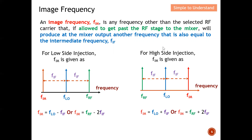For high side injection, FLO is at higher frequency, so FRF is on the left and the image is on the right. To find the image frequency for low side injection, you can use FLO minus FIF, or FRF minus 2×FIF. For high side injection, you can use FLO plus FIF, or FRF plus 2×FIF — either formula will give you the image frequency.